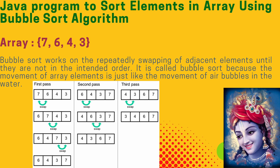In the third pass we compare 4 with 3. Since 4 is greater than 3 we swap. Next we compare 4 with 6; 4 is not greater than 6 so we don't swap. The elements of the array are now arranged in ascending order as 3, 4, 6, 7.